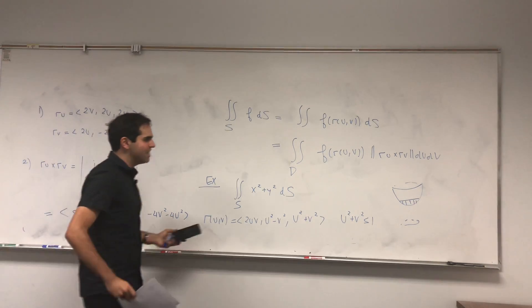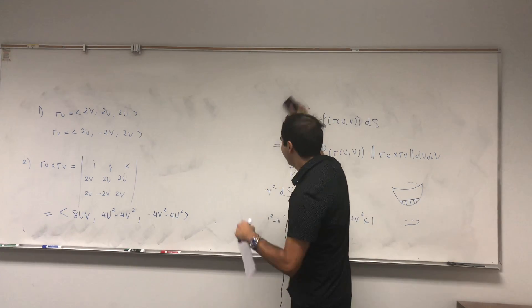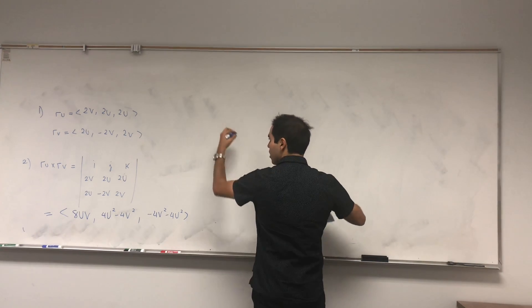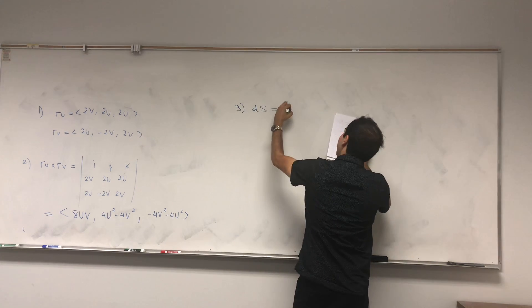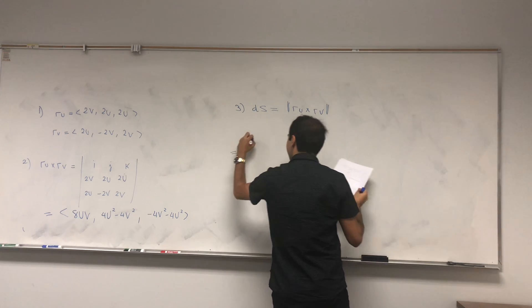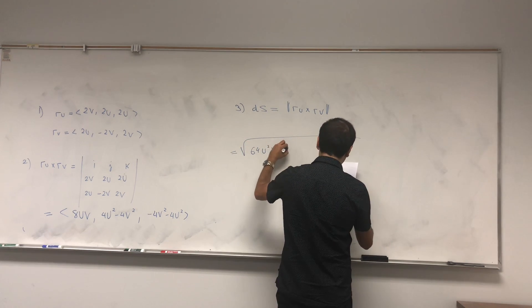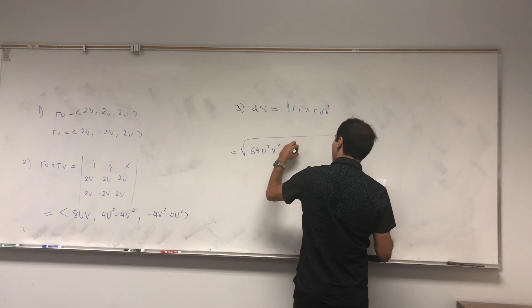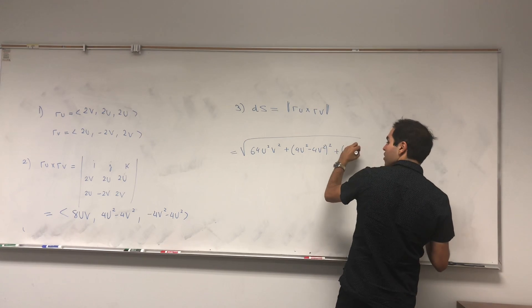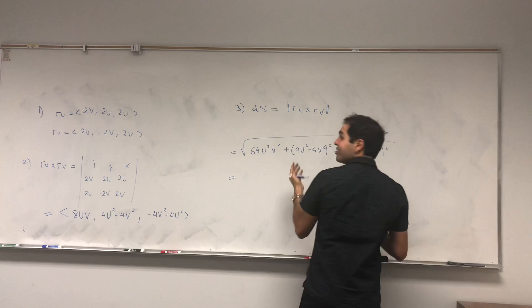Next, let's calculate dS, which is just the length of that vector times dU dV. So dS = |R_U × R_V| = √(64U²V² + (4U²−4V²)² + (−4V²−4U²)²) times dU dV. And we'll see something beautiful happening soon. So: 64U²V² plus (4U²−4V²)² plus (−4V²−4U²)². Looks horrible — but let's just pray there's a simplification.